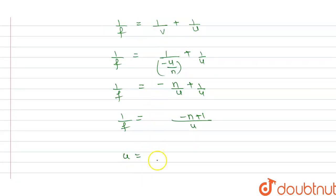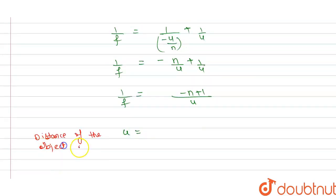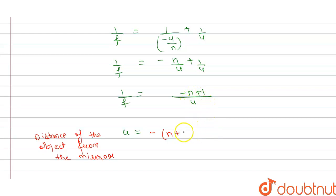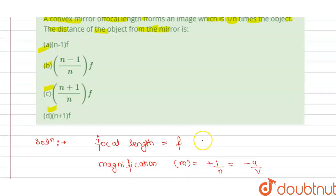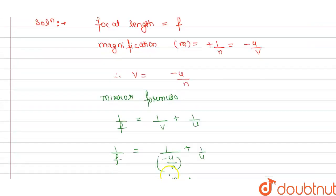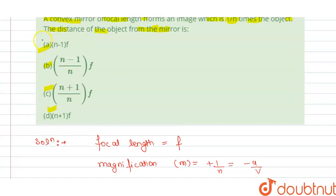From this, u, the distance of the object from the mirror, equals f times (1 - n), which can also be written as minus f times (n - 1). Taking the minus inside the bracket gives us option A as the correct answer.